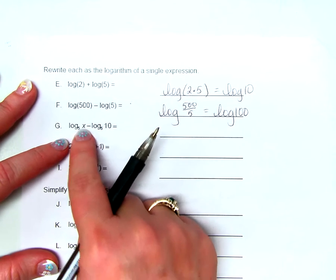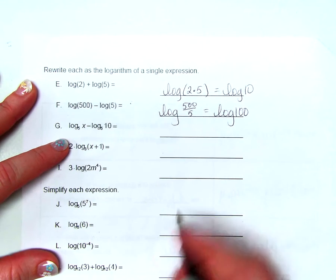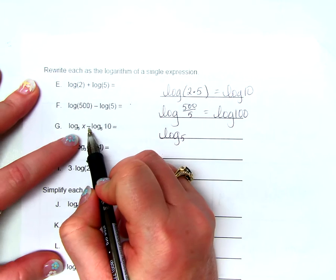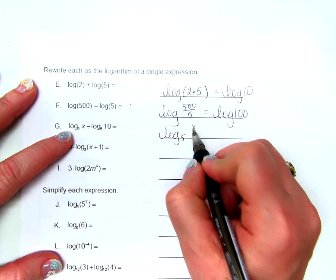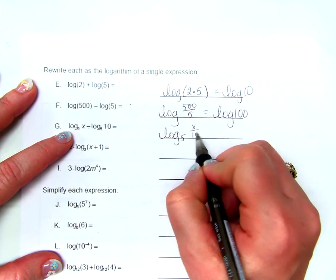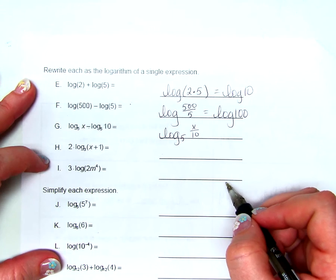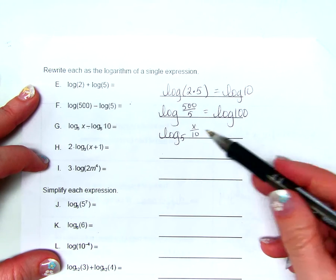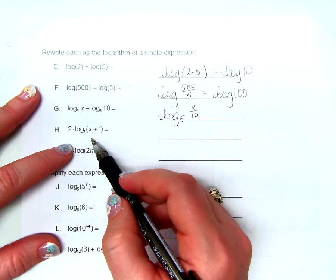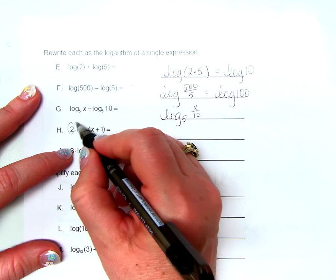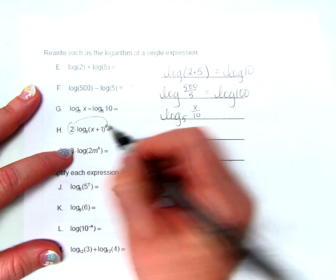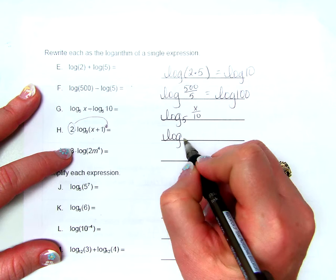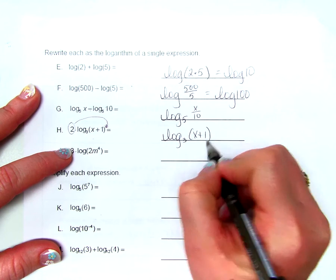Log base 5 of x minus log base 5 of 10: for subtracting like logarithms, we divide the arguments, giving log base 5 of x over 10. We can't go further because we don't have a value for x, so we leave it like that. For the next problem, this 2 becomes an exponent of the argument, giving log base 3 of x plus 1 squared.